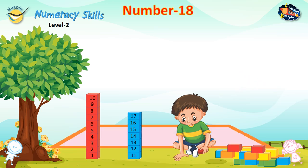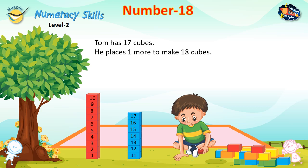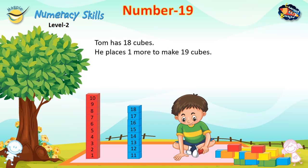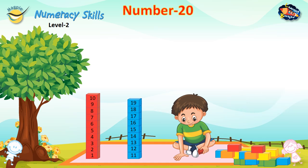Number 18: Tom has 17 cubes, he places one more to make 18 cubes. Number 19: Tom has 18 cubes, he places one more to make 19 cubes. Number 20: Tom has 19 cubes, he places one more to make 20 cubes.